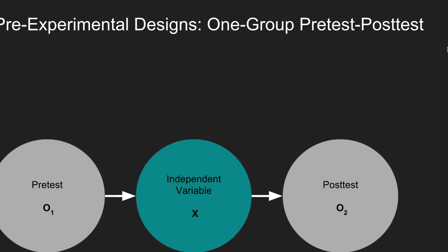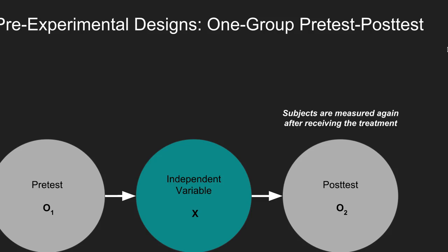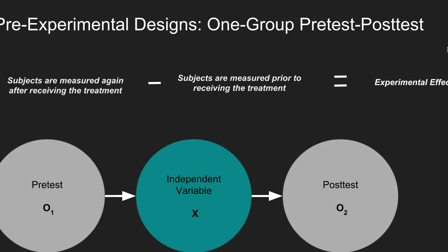For pre-experimental study designs, one of the most commonly used is the single group or one-group pre-test post-test. In this design, a researcher makes two measurements: one prior to the subjects receiving the treatment, labeled the independent variable X, and a second measurement — the post-test — after subjects receive the treatment. The difference between the post-test and pre-test scores can be presumed to represent an experimental effect.